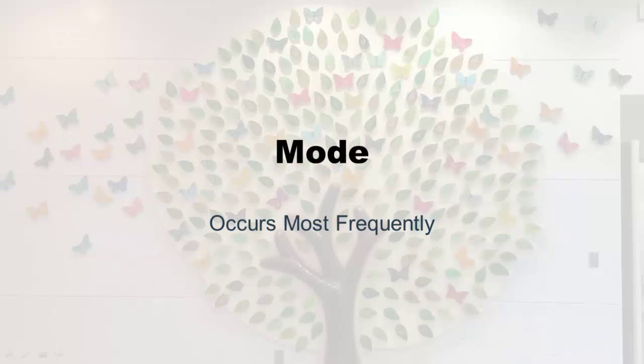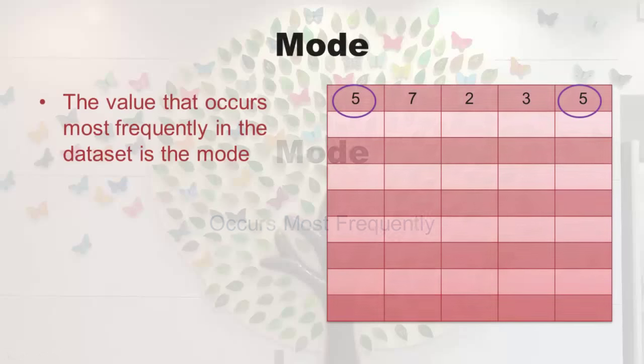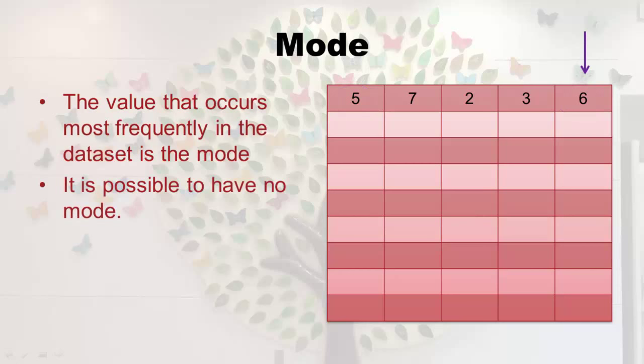Let's start with the mode. The mode is the number in the data set that occurs most frequently. I put up a tiny data set of just five numbers, and it's obvious that five is the mode because it repeats — there are two fives. But if I change one of them to a six, now there's no mode. A lot of data sets don't even have a mode; there's just no repeat at all. That usually happens when you have a broad range of numbers, like systolic blood pressure.